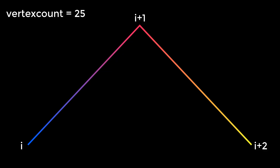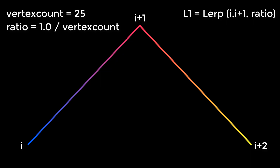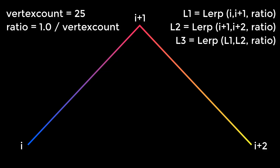To create the Bezier curve we need to do 3 different lerps at a certain ratio. The ratio is 1 divided by the number of points. The first lerp is between I and I plus 1. The second lerp is between I plus 1 and I plus 2. The third lerp will lerp between the results of these two and set the point according to its current ratio.